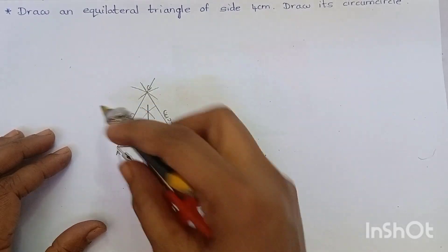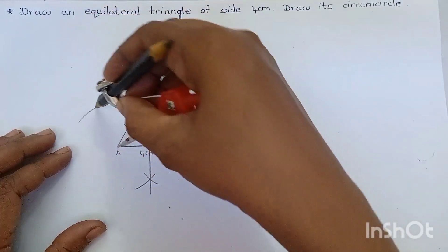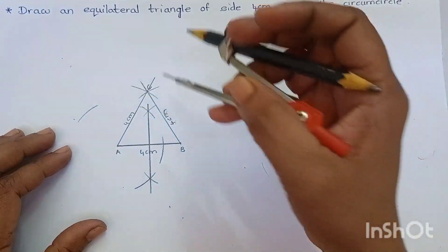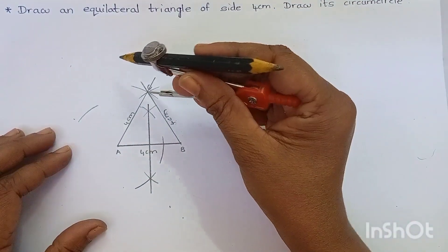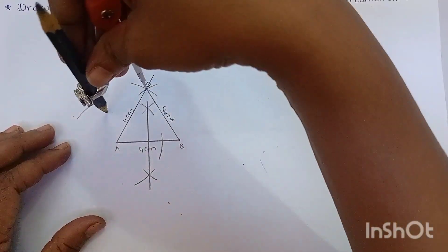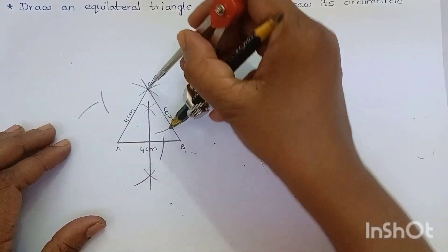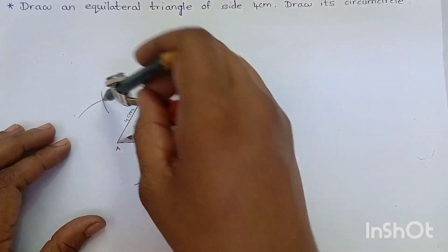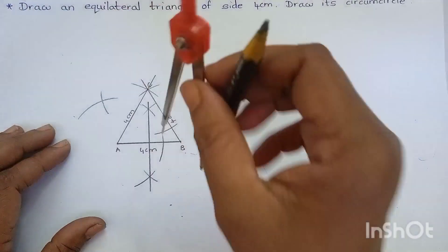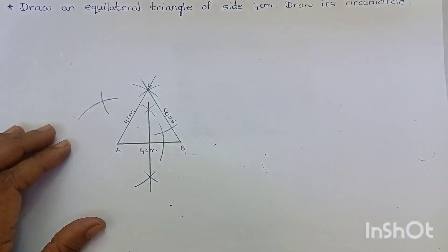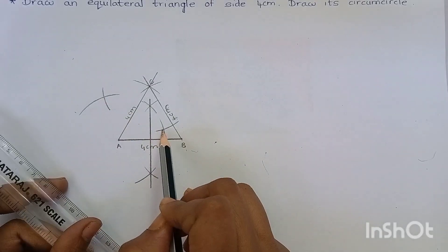From the point A, mark an arc. From the point C, mark an arc. Join these two points.